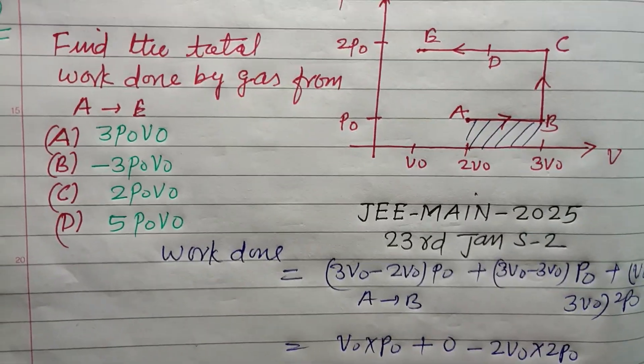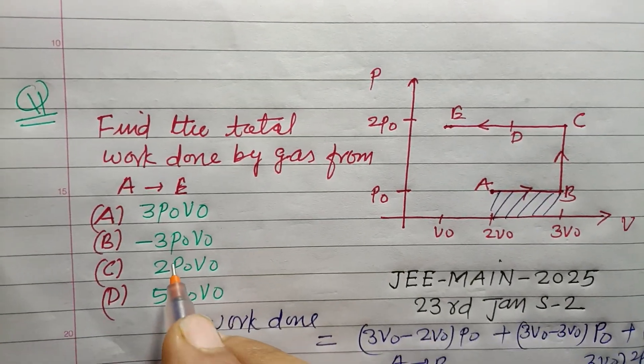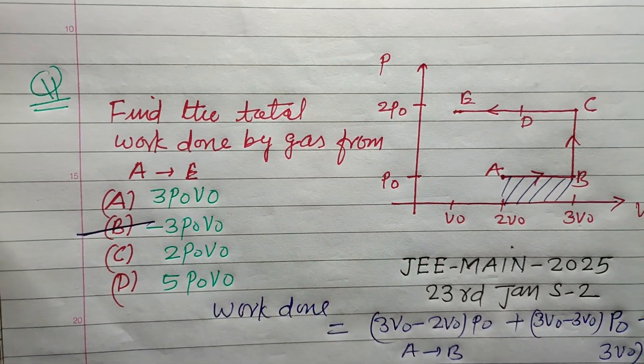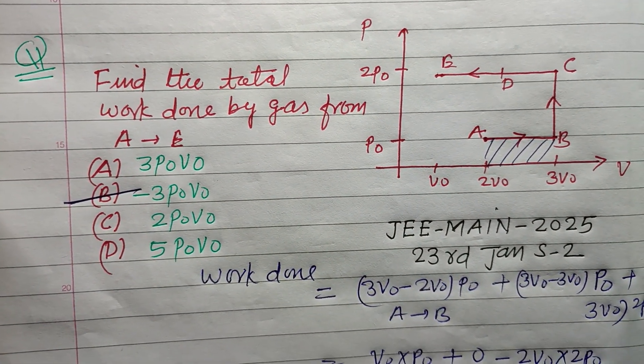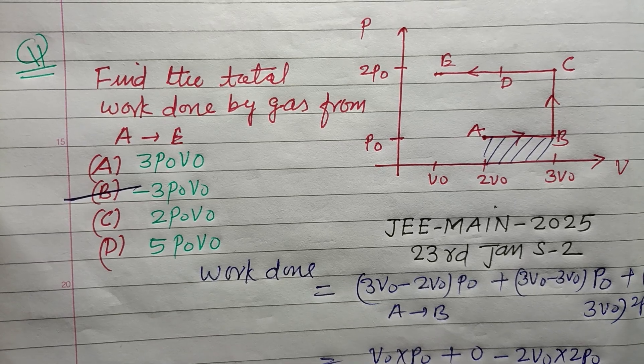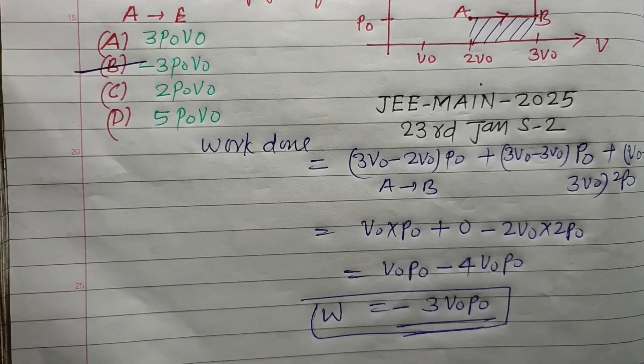Therefore, minus 3P₀V₀ is the correct answer, which is found in option B. Option B is correct. I hope you got it. Please like the video, subscribe to the channel. Thanks for watching.